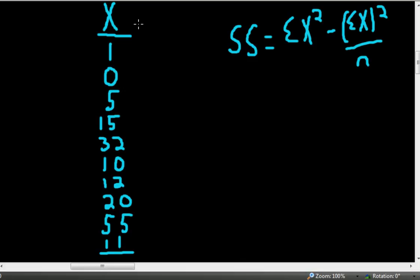Then we'll compute, after we have the sum of squares, we'll compute the variance, sample variance, by taking sum of squares divided by n minus 1. And then finally we'll compute the standard deviation by taking the square root of the variance.